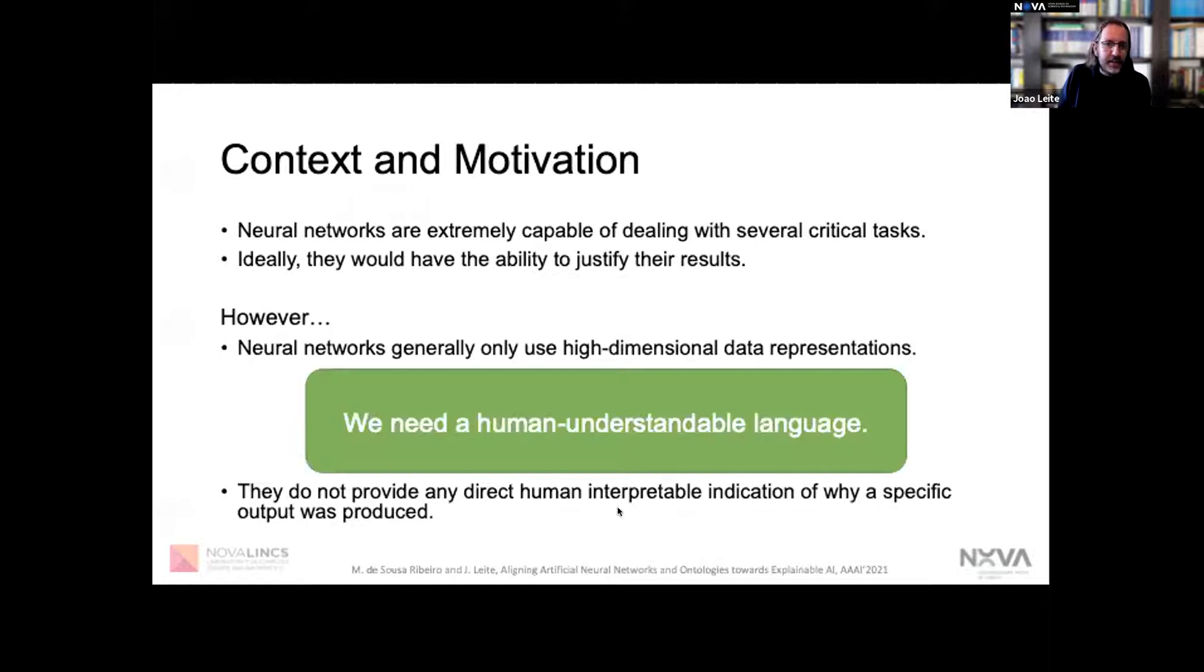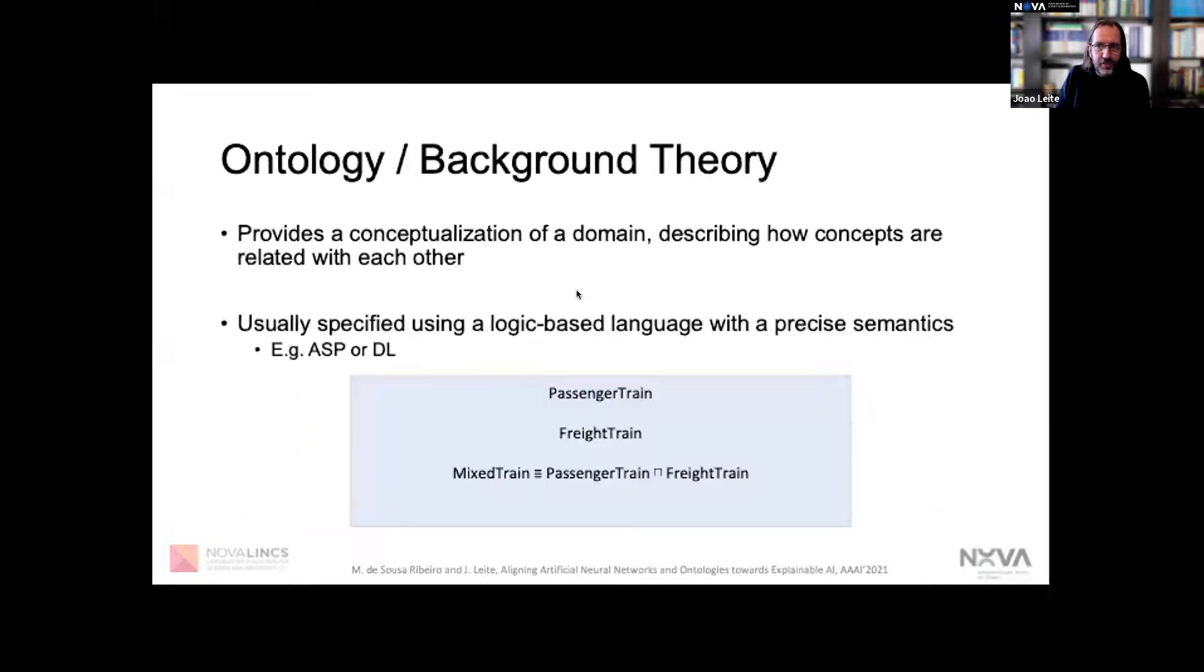What we claim is that to justify the output of a neural network, we need a language containing human understandable concepts and meaningful relationships between those concepts. Without such language, we cannot even begin to attempt to express comprehensible justifications.